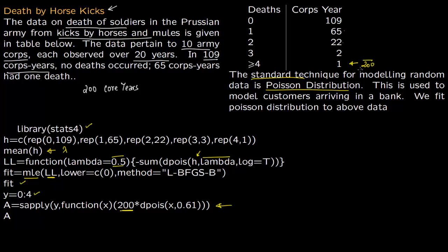You're going to multiply each of them with 200, since 200 is the total size. You multiply 200 with the Poisson distribution to find: if lambda is indeed 0.61, how many corps-years do we get?